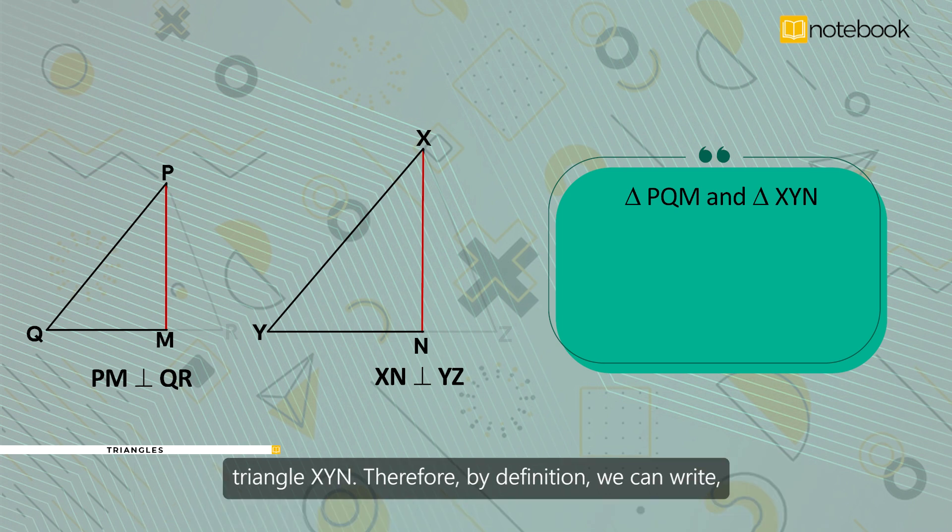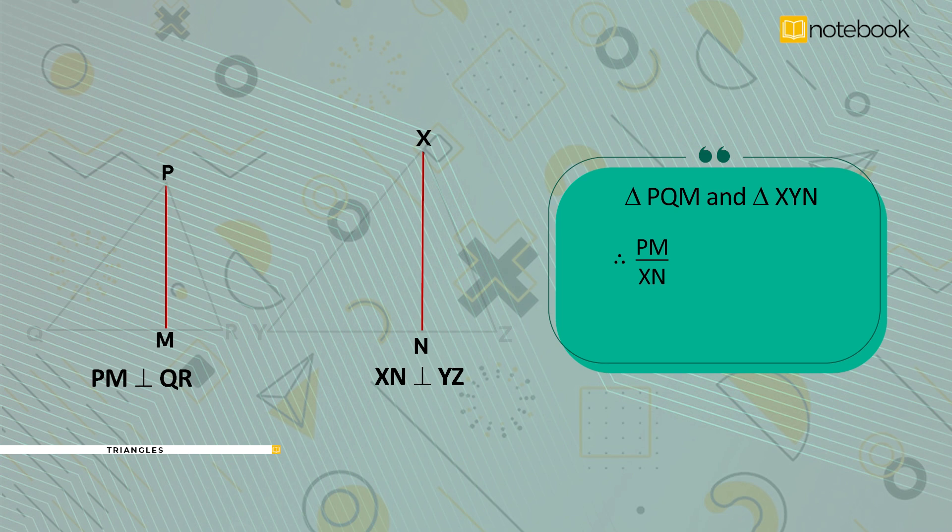Therefore, by definition, we can write PM by XN is equal to PQ by XY. Let's say this is equation 2.